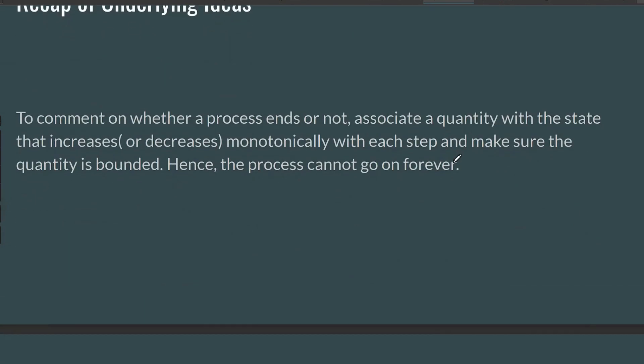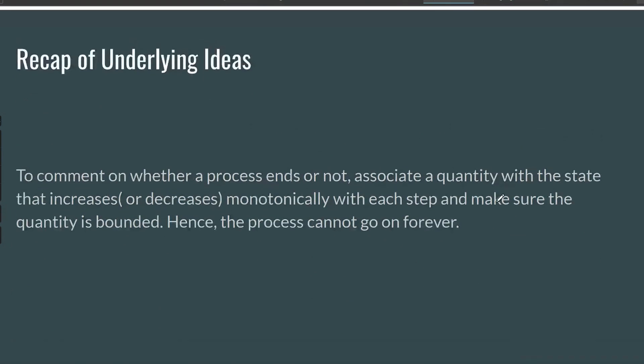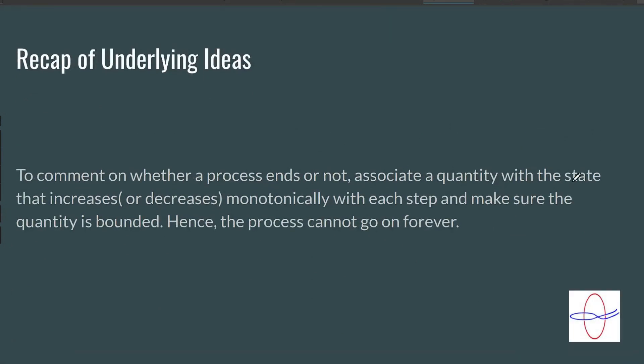So we saw two ways in which monovariants can help us. A recap of the underlying idea is that to comment on whether a process ends or not, associate a quantity with a state that increases or decreases monotonically with each step, and make sure that the quantity is bounded. Hence, the process cannot go on forever. This is what I was talking about in the beginning. You keep increasing, but if there is a roof, it cannot increase forever. And hence, the process cannot go on forever. If the value of this quantity increases with each step of the process, clearly, you only have finitely many steps to go.